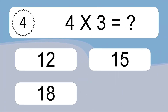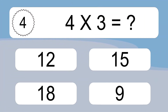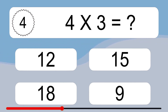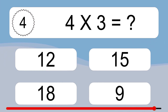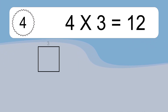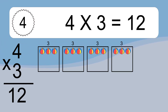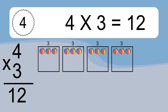4 times 3 equals what? We have 4 boxes, and each box has 3 colorful balls inside. If you count all the balls in all the boxes together, you will have 4 times 3 balls. This equals 12 balls.